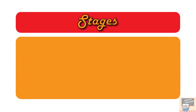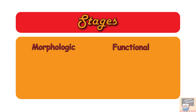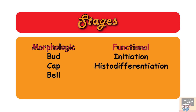Tooth formation can be classified into either morphologic or functional stages. The morphologic stages are based on the shape of the enamel organ and they include bud stage, cap stage, and bell stage. The functional stages include initiation, histodifferentiation, morphodifferentiation, and apposition.